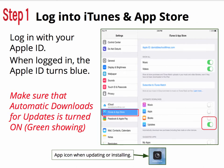Step 1. Open Settings and go to iTunes App Store. Step 2: log in with your Apple ID and password. Make sure that automatic downloads for updates is turned on, which means it's green and showing.